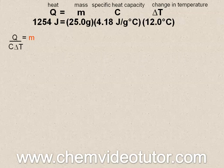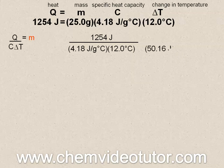Using the same numbers from above, we would put the 1254 joules of heat on top and divide that by the specific heat capacity of 4.18 joules per gram degree Celsius multiplied by the 12 degree change in temperature. After multiplying the bottom numbers together, your numerical setup should look like this so that when you divide, you get the mass of 25 grams.